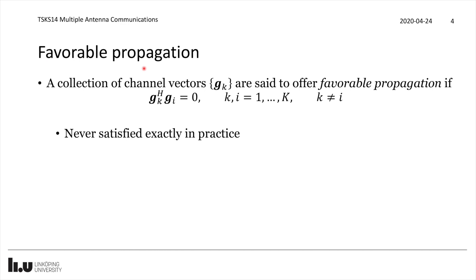This motivates what we call favorable propagation. A collection of channel vectors {g_k} are said to offer favorable propagation if, for any two different vectors k and i (both between 1 and K), their inner product is zero. When this holds, the K users can communicate as if they are alone in the system, even if they transmit at the same time and frequency, because the base station can separate them very easily in space.